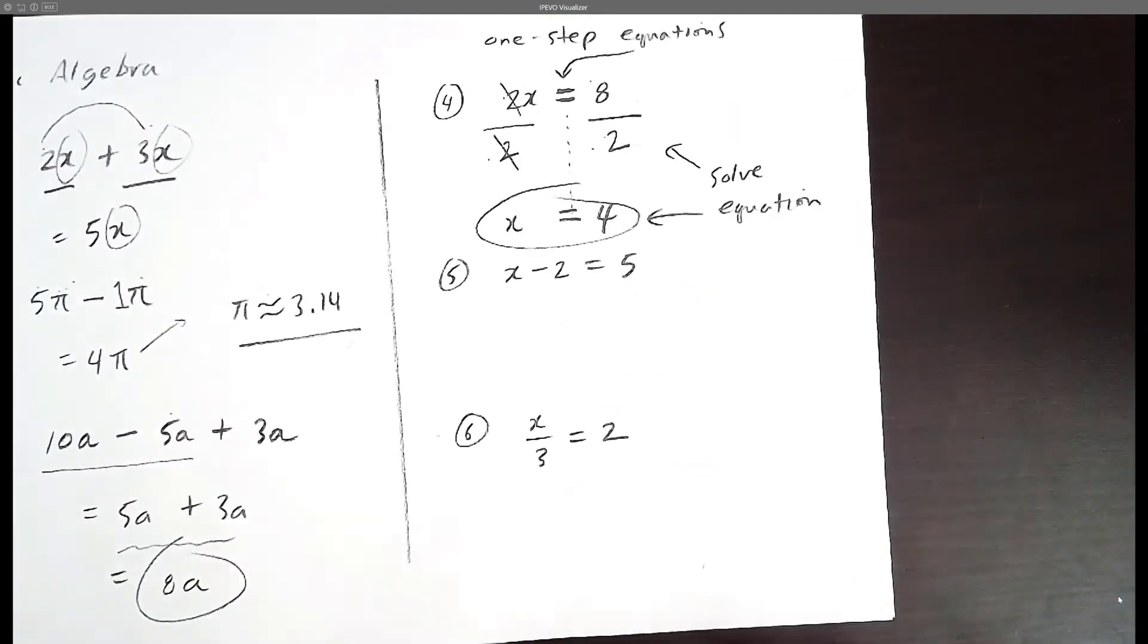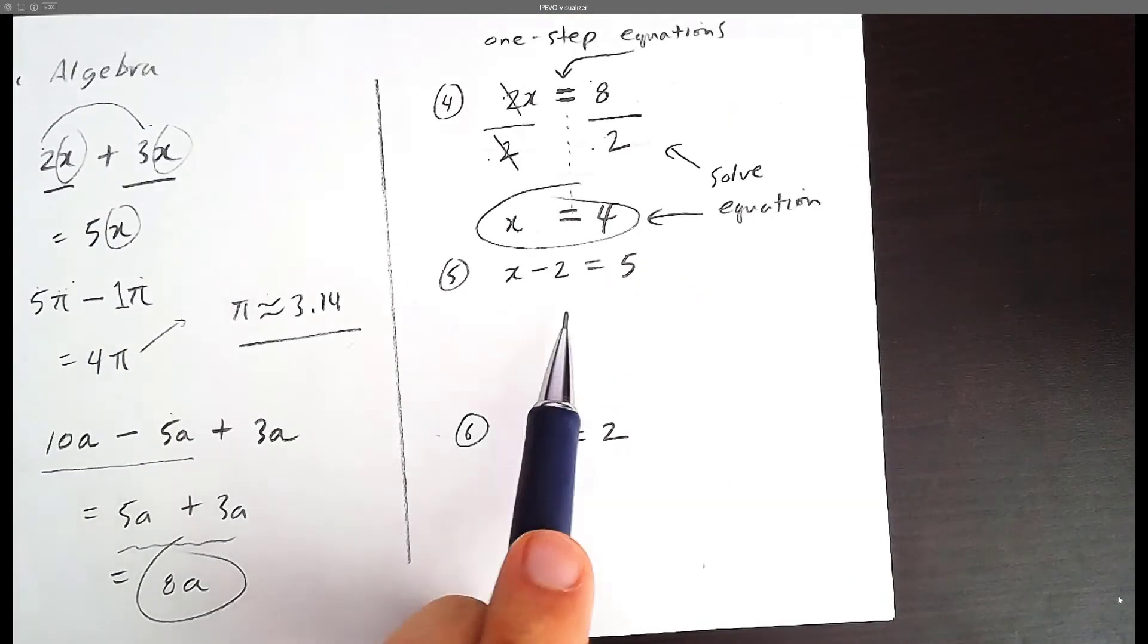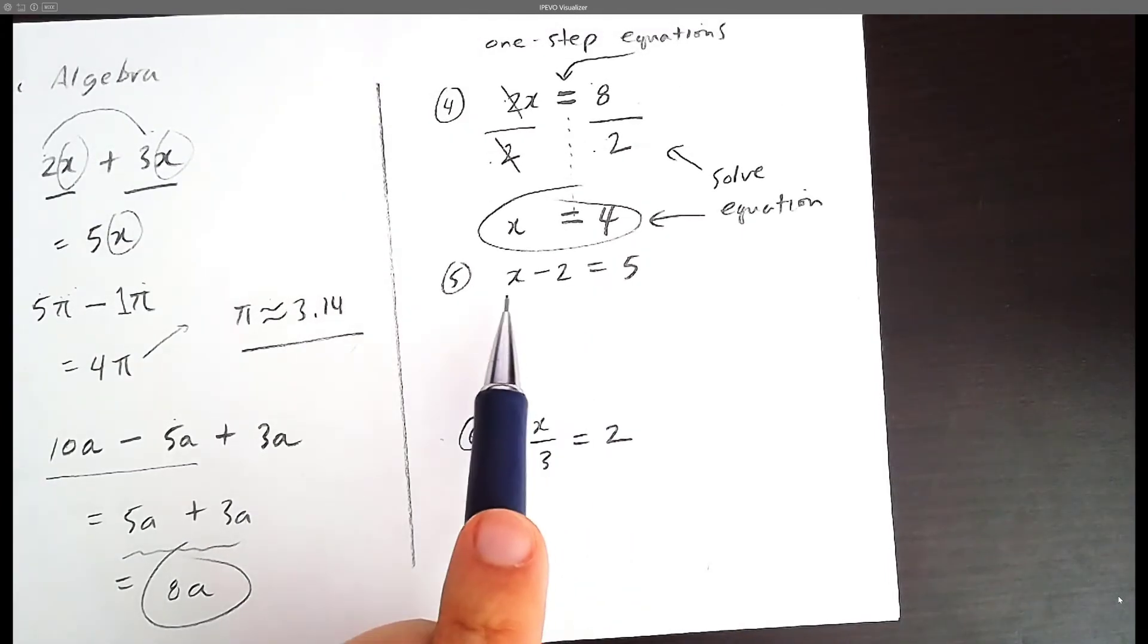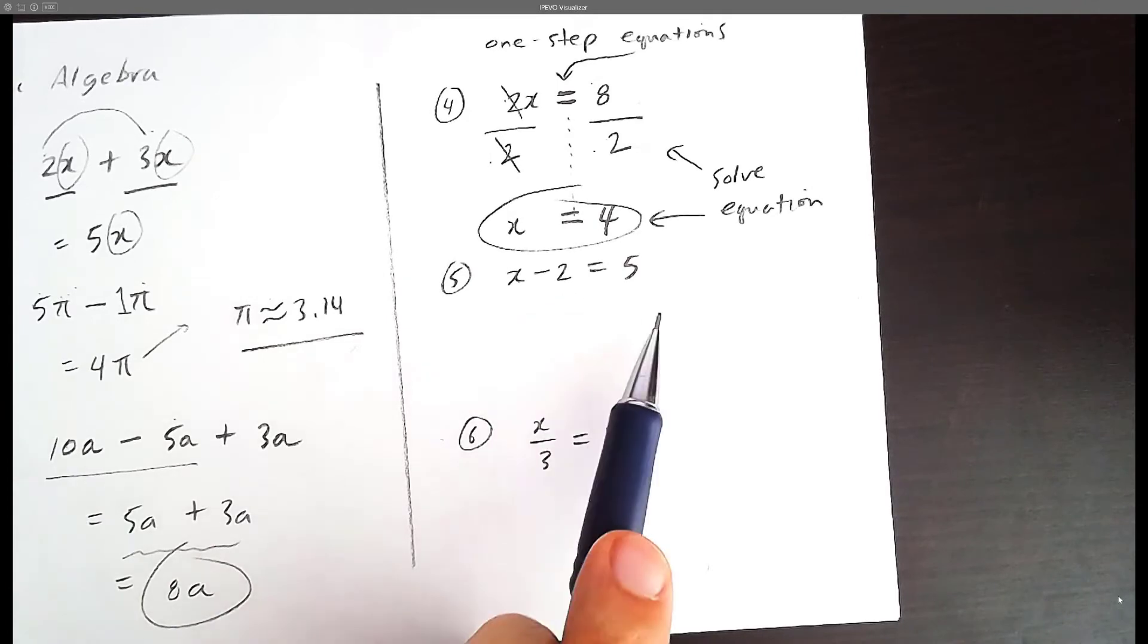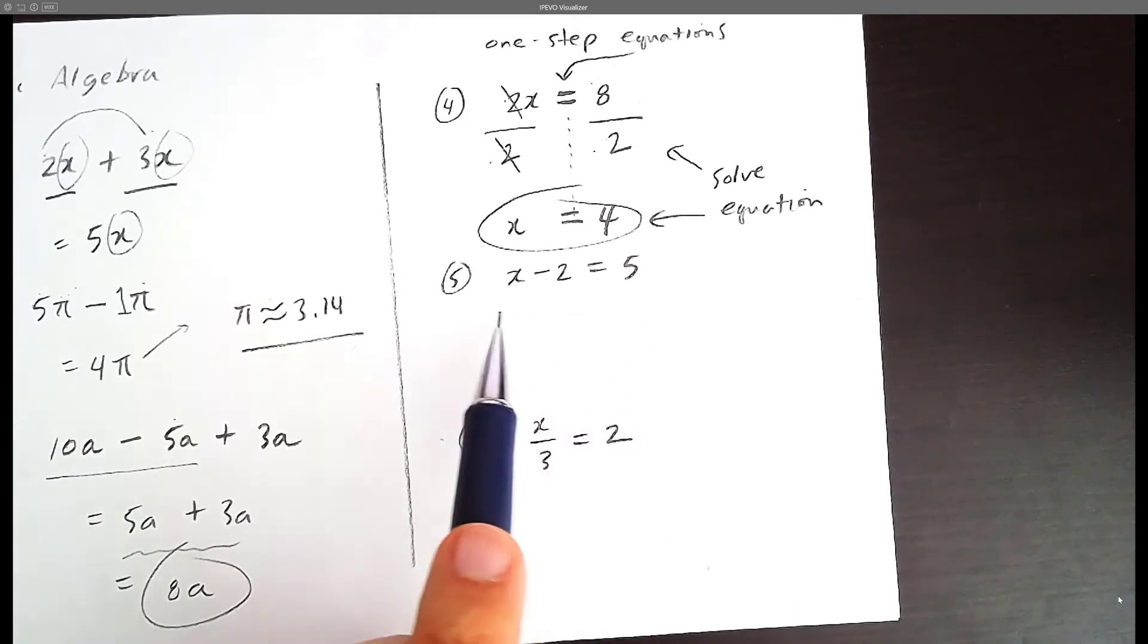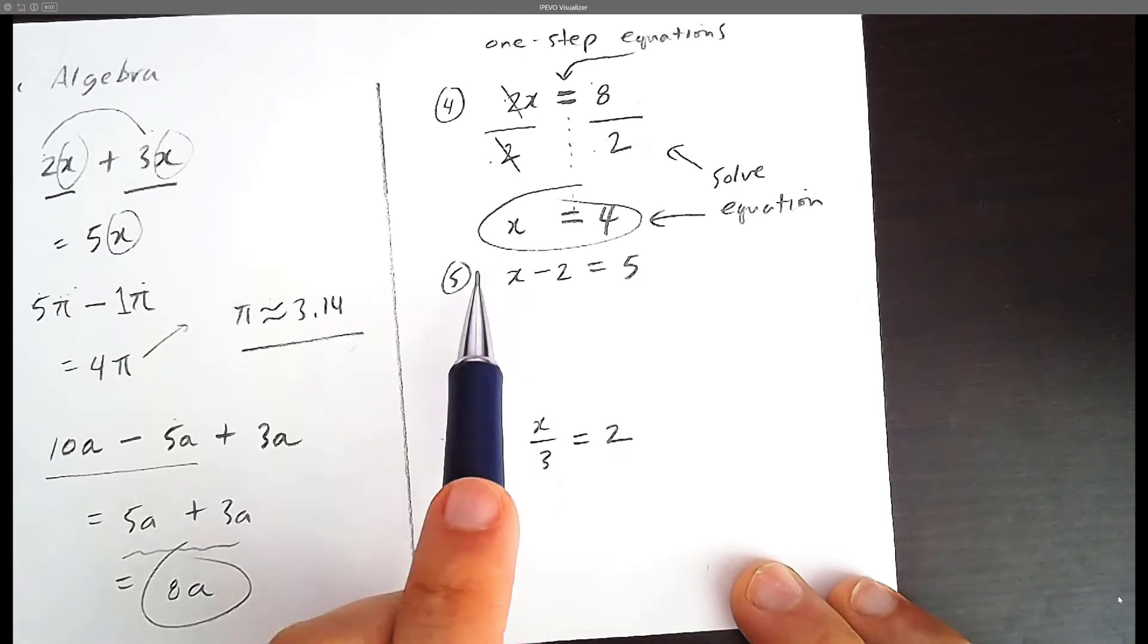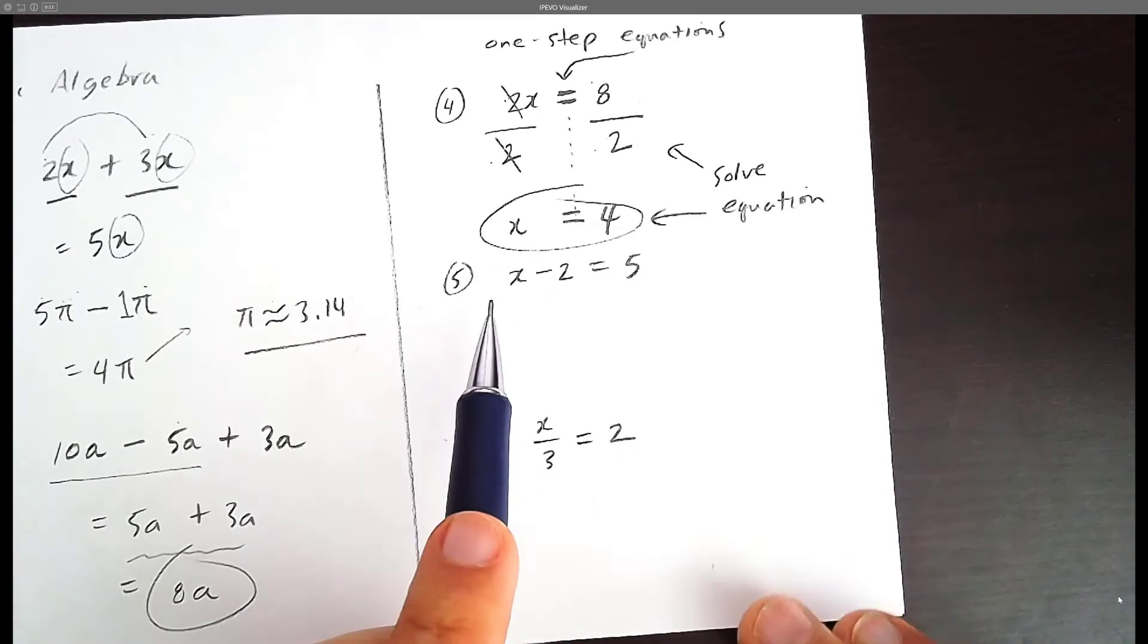Let's try another one-step equation problem. We have an equal sign here. You could probably guess it. What something minus two is five? If you spend years meditating on this question, you might eventually just guess the answer is seven. Seven minus two is five, and you can just guess that x is 7.